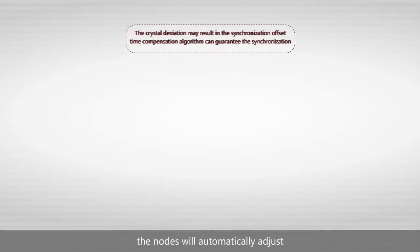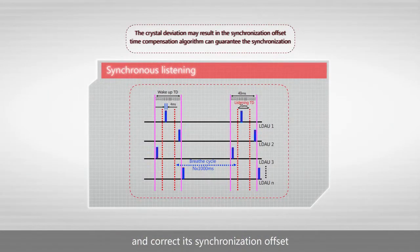During data transmission, the nodes will automatically adjust and correct its synchronization offset to improve the system efficiency.